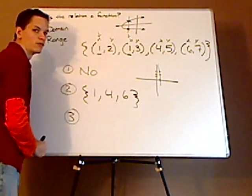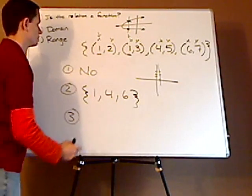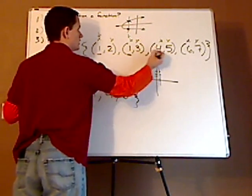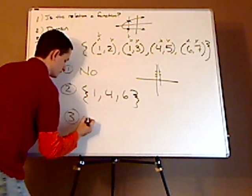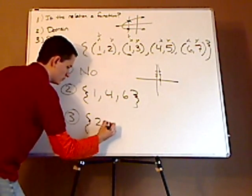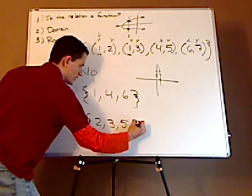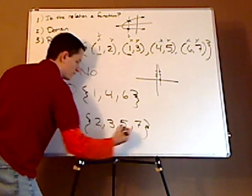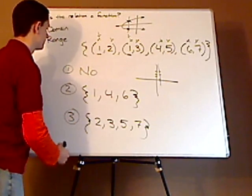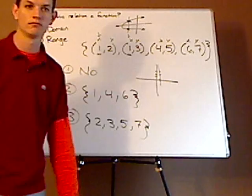For its range, the range is all possible Y values. So it would be two, three, five, and seven. The range is two, three, five, and seven. Make sure it's in order for domain and range. And that's it.